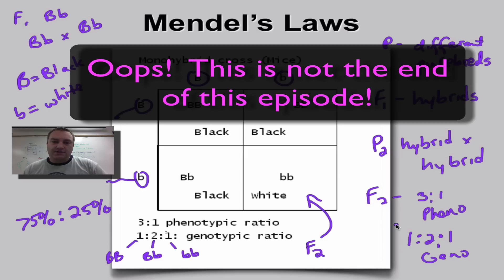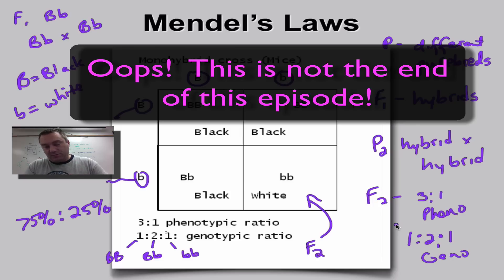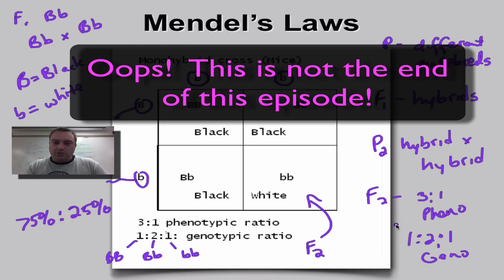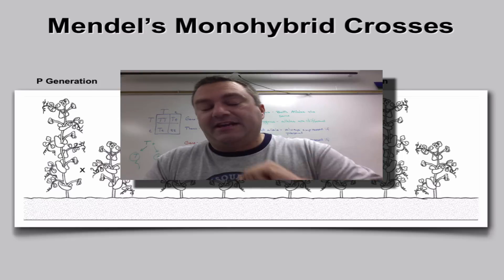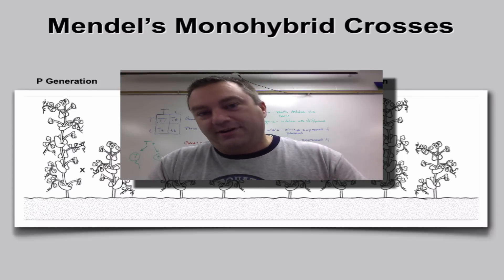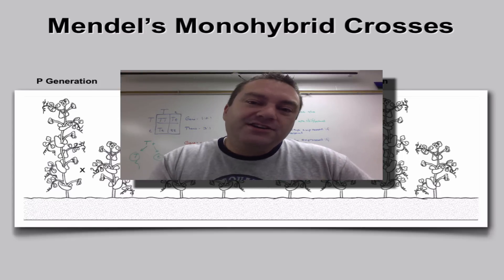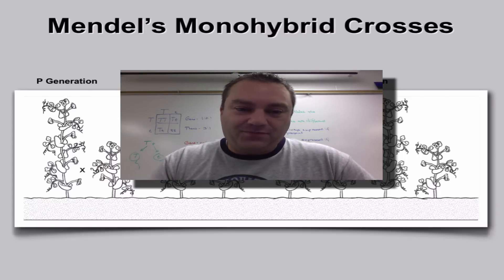This is a very important episode — one of three most important parts. Episode 7 covers Mendelian vocabulary, this one (part 8) covers the monohybrid cross, and part 9 will be the dihybrid cross. Make sure you watch these three more than once before any tests or quizzes.